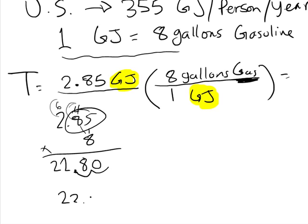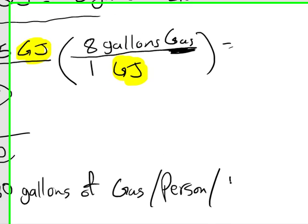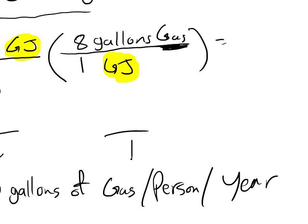So the answer is 22.80 gallons of gas per person per year for Tanzania.